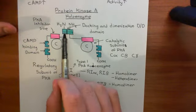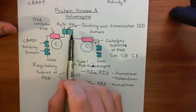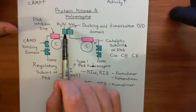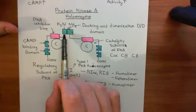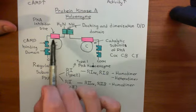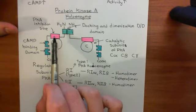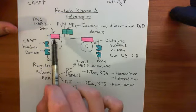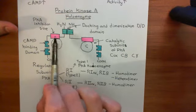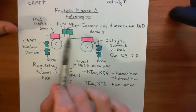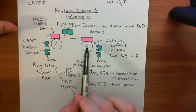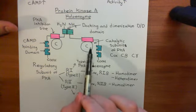Firstly, you dimerize two regulatory subunits of protein kinase A together via their docking and dimerization domains. Then you attach onto the PKA inhibitor sites of the two regulatory subunits in the regulatory subunit dimer the catalytic subunits of protein kinase A.